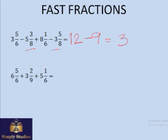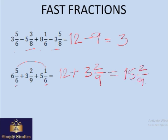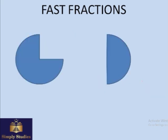One more: the denominator doesn't need to be the same here. 5/6 and 1/6 give you 1, and 6 plus 5 is 11, so 11 plus 1 is 12. Adding 3 and 2/9 gives us 15 and 2/9. Now something more advanced.